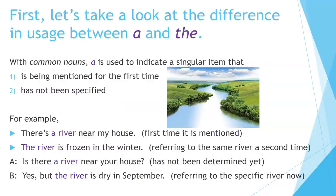First, let's take a look at the difference in usage between a and the. With common nouns, a is used to indicate a singular item that is being mentioned for the first time or has not been specified. For example, there's a river near my house. This is the first time it's mentioned. The river is frozen in the winter — it's referring to the same river a second time. Is there a river near your house? That hasn't been determined yet.